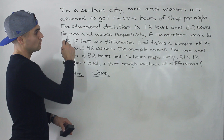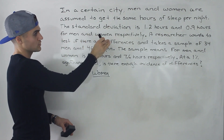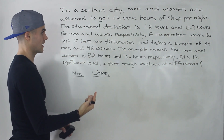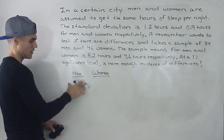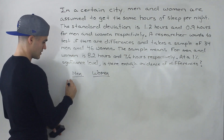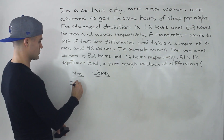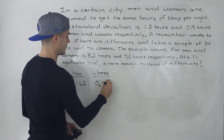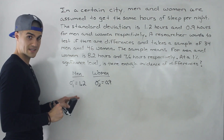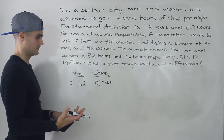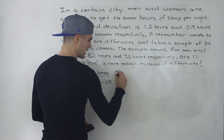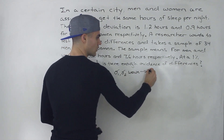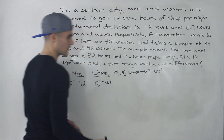Notice that the standard deviation is 1.2 hours and 0.9 hours for men and women respectively — those are the population standard deviations. If we consider men as population 1 and women as population 2, then σ1 = 1.2 hours and σ2 = 0.9 hours. Since the population standard deviations are known, from the overview video we know we're going to be doing a Z test.